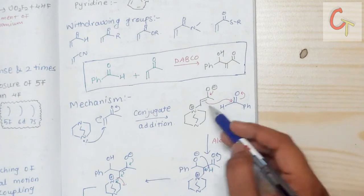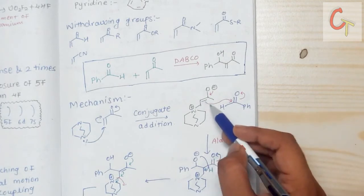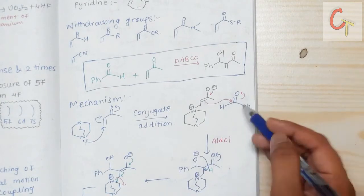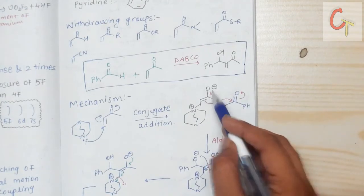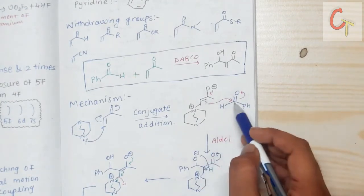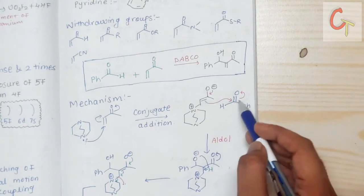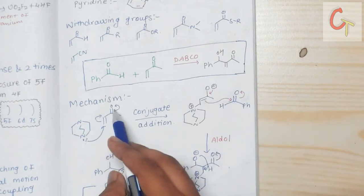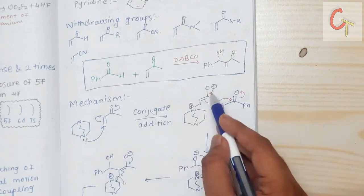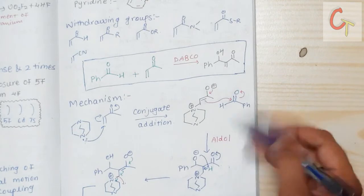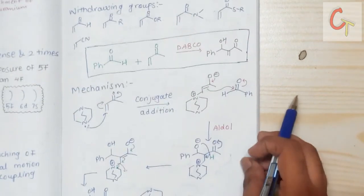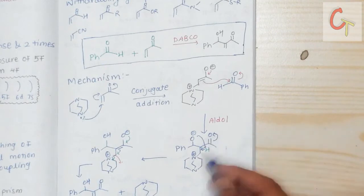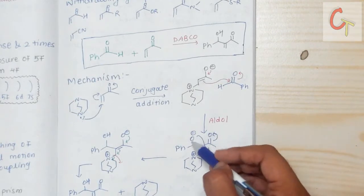In the next step, the aldol reaction takes place. The carbon attacks the electrophilic carbon — this carbon is electrophilic in nature — and the double bond shifts toward the oxygen. The negative charge formed on oxygen in the first step migrates toward this step, and the aldol reaction gives the aldol product. We can see that in the next step this negative oxygen abstracts a proton.